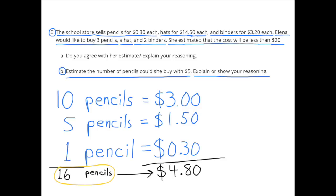Part B: Estimate the number of pencils she could buy with $5. Explain or show your reasoning. Well, if pencils are 30 cents each, she could buy 10 pencils for $3, 5 pencils for $1.50, and another pencil for 30 cents. That would be 16 pencils for $4.80. So with $5, she could buy 16 pencils.